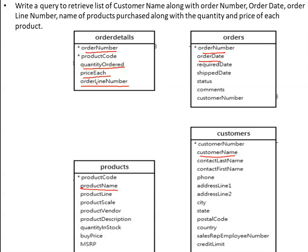This gives us a clear view that all these attributes are available in four different relations. Now we will try to find out if there is any association between these four relations. There is a relation between the customers table and the orders table: customer number, which is acting as a primary key in the customers table, is acting as a foreign key in the orders table. So there is an association between the customers relation and the orders relation.